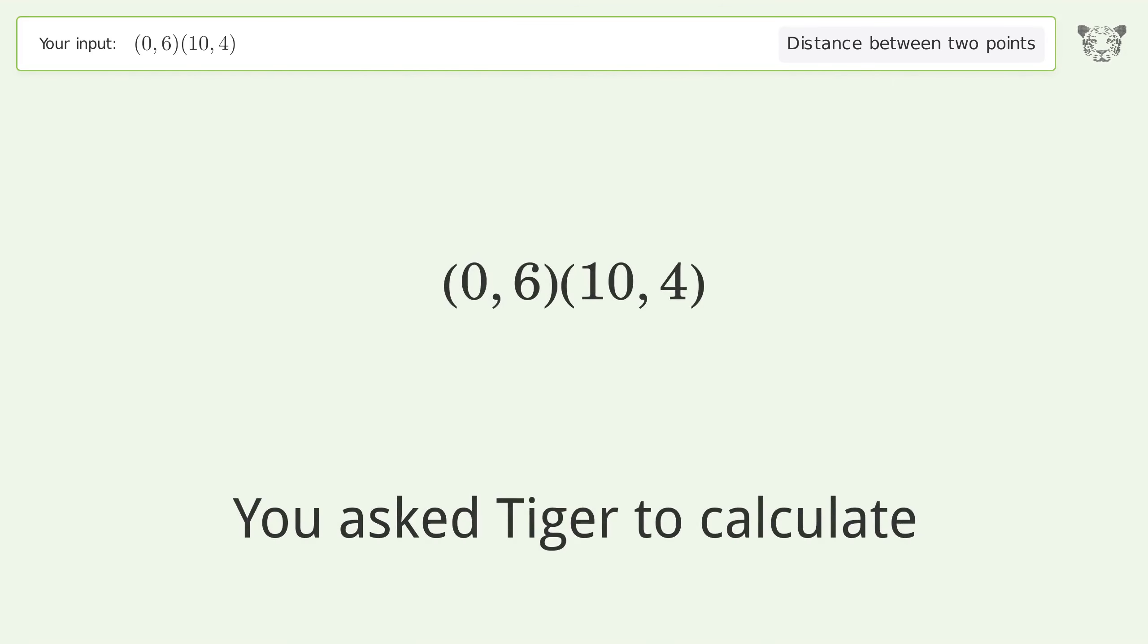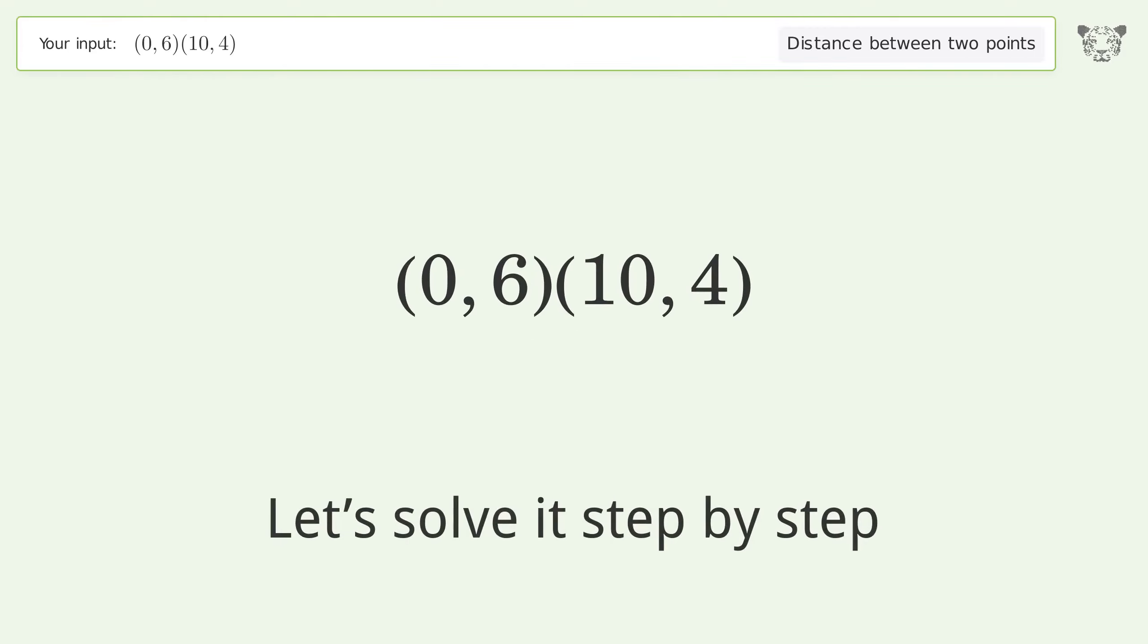You asked Tiger to calculate the distance between two points. The distance is the square root of 104, or 10.198. Let's solve it step by step.